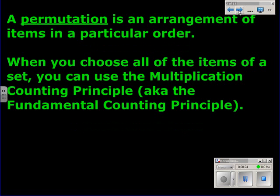A permutation is an arrangement of items in a particular order. When you choose all the items of a set, you can use the Multiplication Counting Principle, also known as the Fundamental Counting Principle.